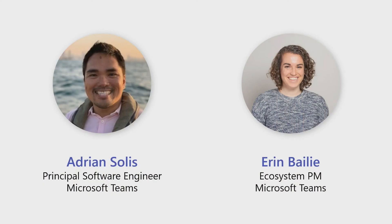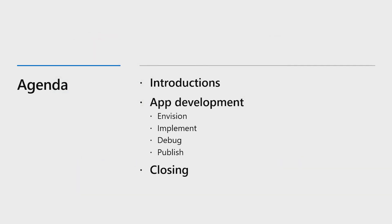We're going to talk about the app development process, and we'll take you through the four phases of app development: envisioning your app, implementing it, debugging it, and then publishing it. Lastly, we'll share some resources and tips for writing and publishing an app in Teams.